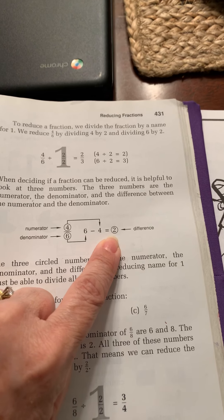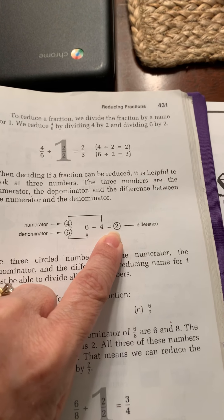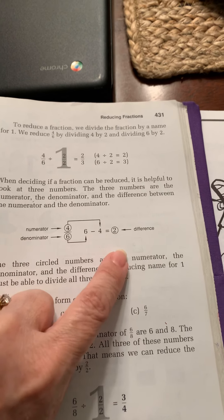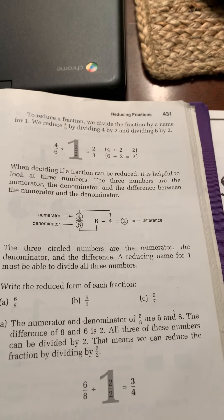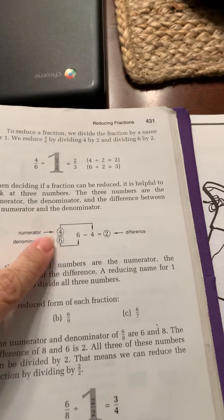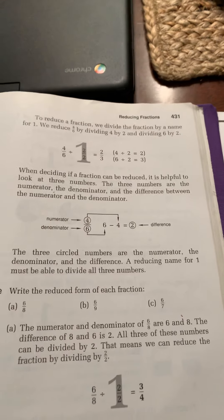So we would take this difference to put it over another two, making two halves, which is one, and then divide four-sixths.